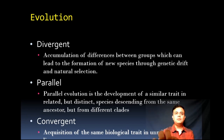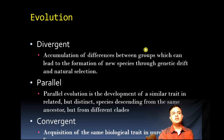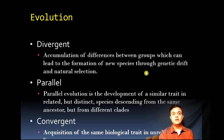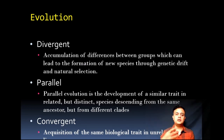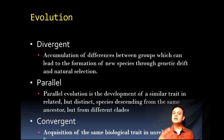Divergent evolution involves the accumulation of differences between groups, which can lead to the formation of new species through genetic drift and natural selection. These are the two main methods of speciation. New characters evolve and subsequently that species diverges into two different species.